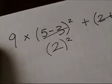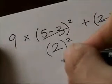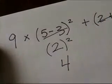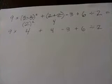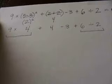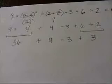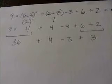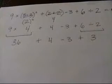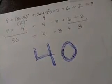Next, get rid of that exponent. 2 squared is 4. What's next? Well, multiply and divide. Just add and subtract the rest from left to right. And what do you get? Forty!